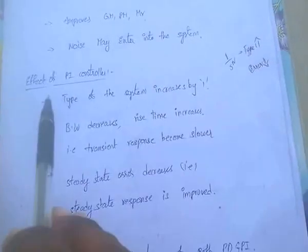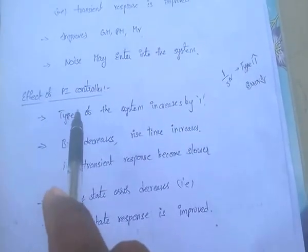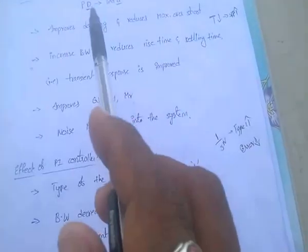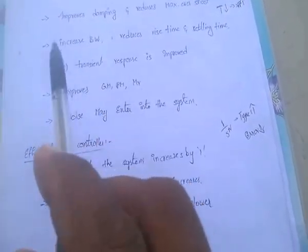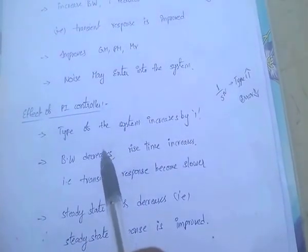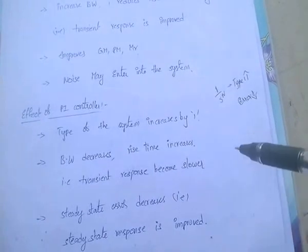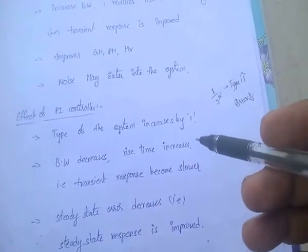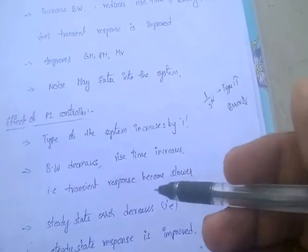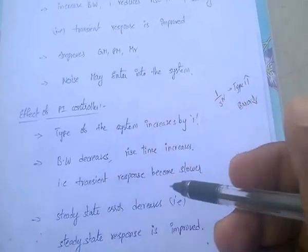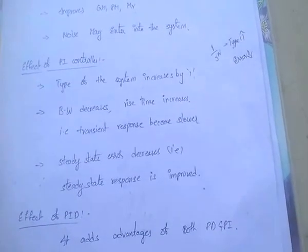By the effect of the PI controller, bandwidth decreases — whereas the PD controller increases bandwidth. Here bandwidth decreases and rise time increases. As time increases, the transient response will be slower, that is speed decreases, so the transient response will be slower.